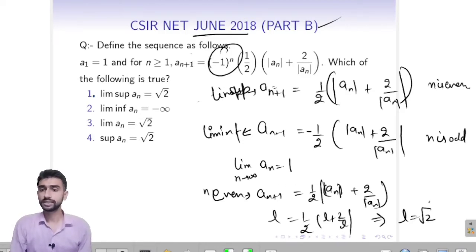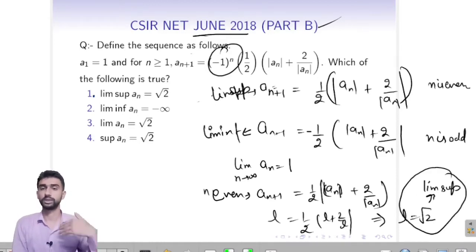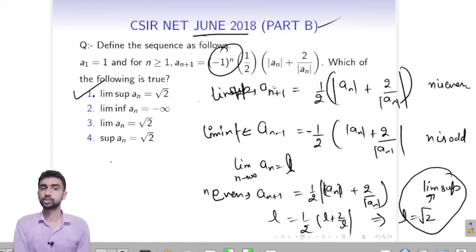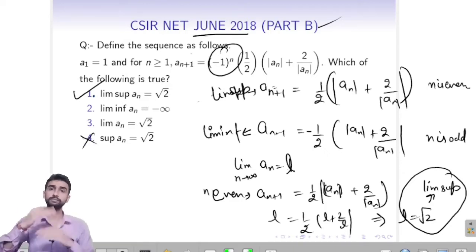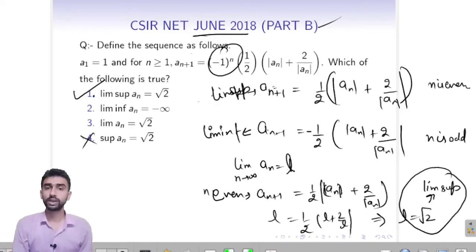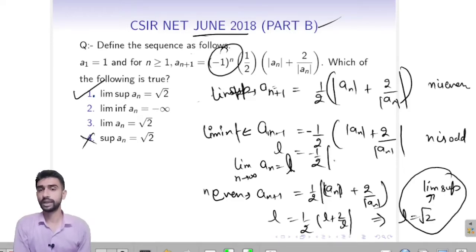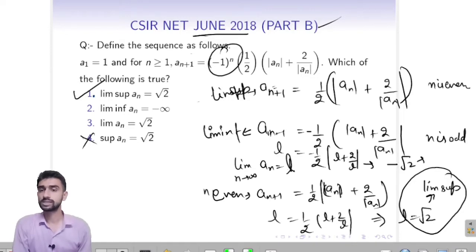This is the lim sup of this equation — the lim sup because it is the value of L. The first option is correct. Supremum is not necessarily root 2; supremum may change, but the lim sup of this sequence will be root 2. For lim inf, we will find the limit from the odd case: L equals to minus 1 by 2 times (L plus 2 upon mod L). When you solve it, you get minus 2, which is the lim inf of this sequence.